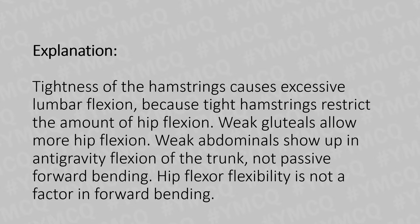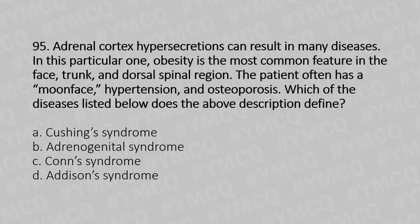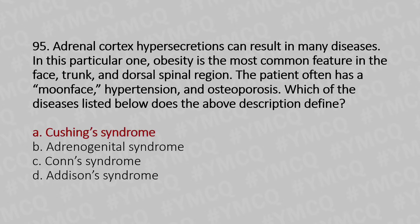Now let's move to our 95th question. Adrenal cortex hypersecretion can result in many diseases. In this particular one, obesity is the most common feature in the face, trunk, and dorsal spinal region. The patient often has a moon face, hypertension, and osteoporosis. Which of the following diseases does the above description define? Option A: Cushing syndrome. Option B: Adrenogenital syndrome. Option C: Conn syndrome. Option D: Addison syndrome. And the answer is Option A: Cushing syndrome.